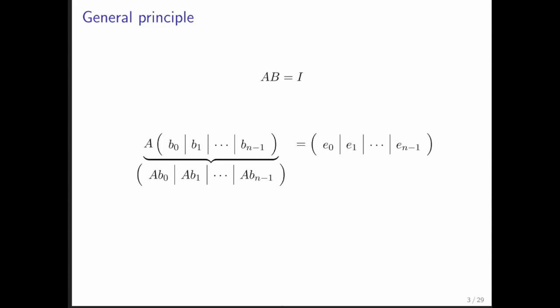What is it that we know about the columns of B? Well, if we partition B into its columns, and we then multiply that by A, then we know that all we need to do is multiply the individual columns of B by that matrix A.